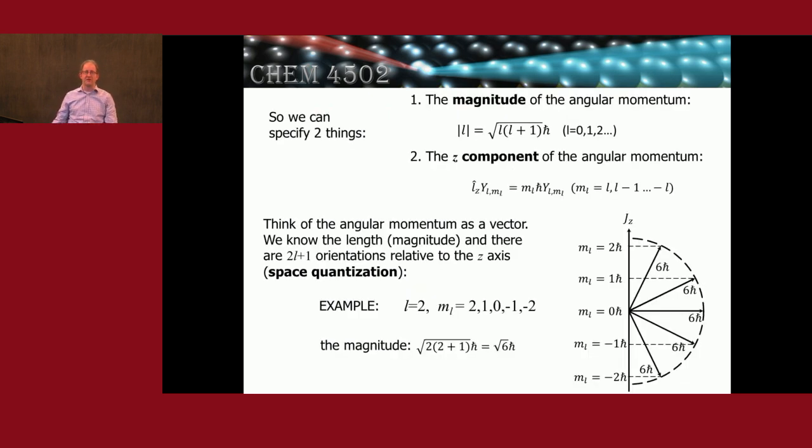Let's take a look at this graphically. The two things we can specify are the magnitude of the orbital angular momentum, which we'll show as the magnitude of L, equal to the square root of L times (L plus 1) times h-bar. And we know the z component: Lz operating on the spherical harmonics gives us m h-bar times the spherical harmonics, where m sub L can range from minus L to plus L.